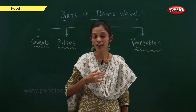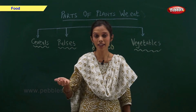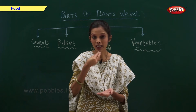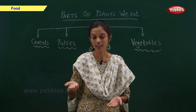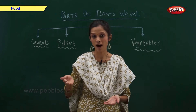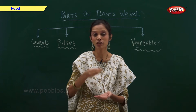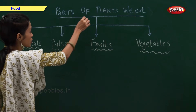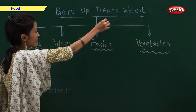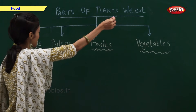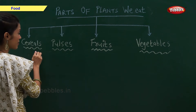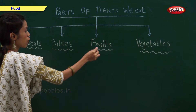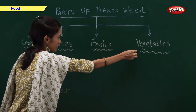We get many kinds of food from plants. We eat plants or a part of plants as food. Now, let us look at the parts of plant that we eat. We eat cereals, pulses, fruits and vegetables.